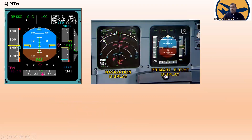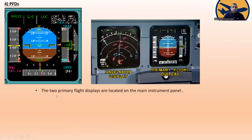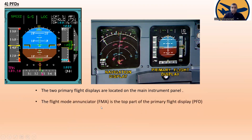Now the PFD — Primary Flight Display. Here you can see the primary flight display. The two primary flight displays are located on the main instruments panel — one for the captain and one for the first officer. The flight mode announcer is located at the top part of the primary flight display.